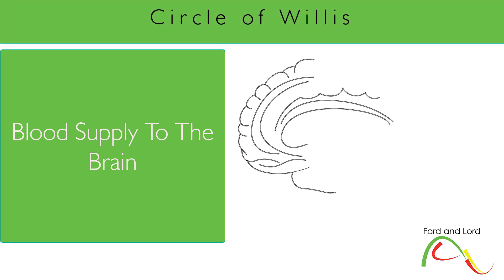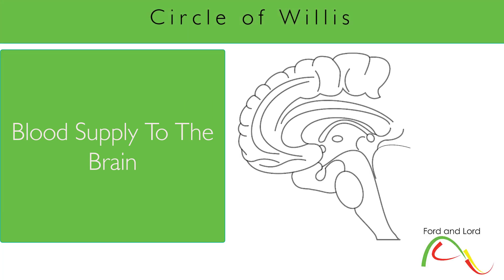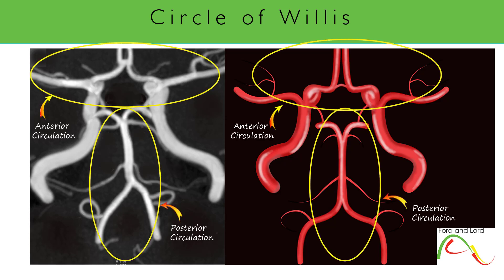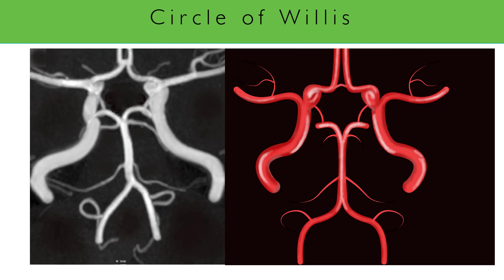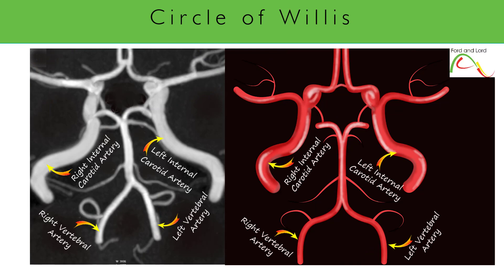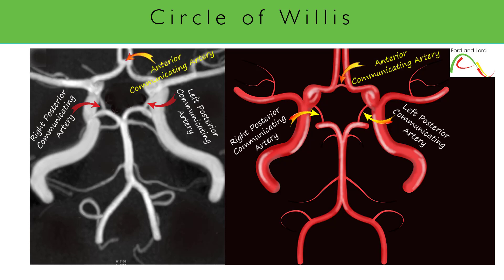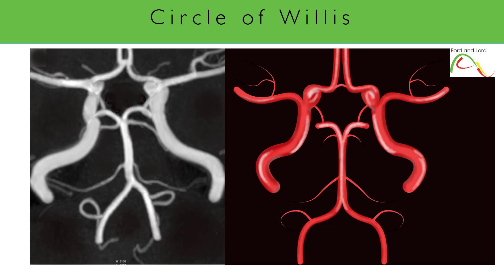Today's video is about the circle of Willis and blood supply to the brain. The blood supply to the brain is usually divided into anterior and posterior circulations. There are two main pairs of arteries: the internal carotid arteries and the vertebral arteries. Internal carotids form the anterior circulation, while the vertebral arteries and basilar artery form the posterior circulation. The anterior and posterior circulations within the brain are interconnected via posterior communicating arteries, and there is an anterior communicating artery which creates anastomosis between the two anterior cerebral arteries, making a complete ring known as the circle of Willis.